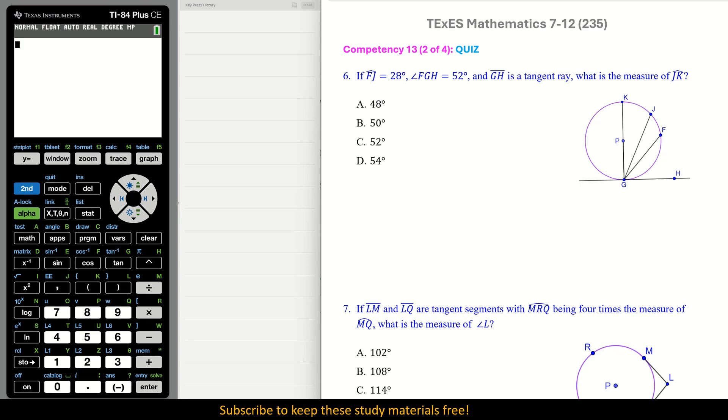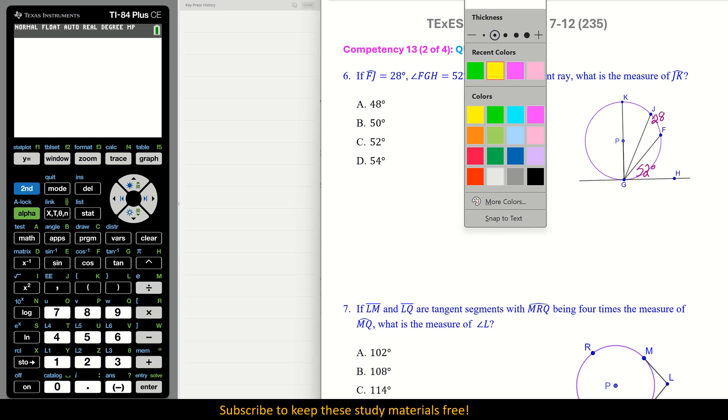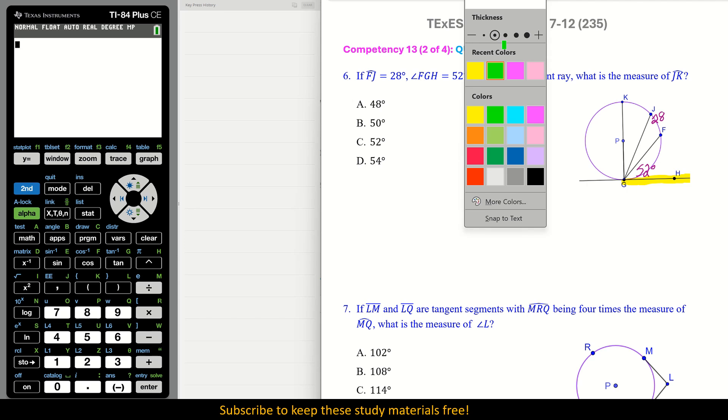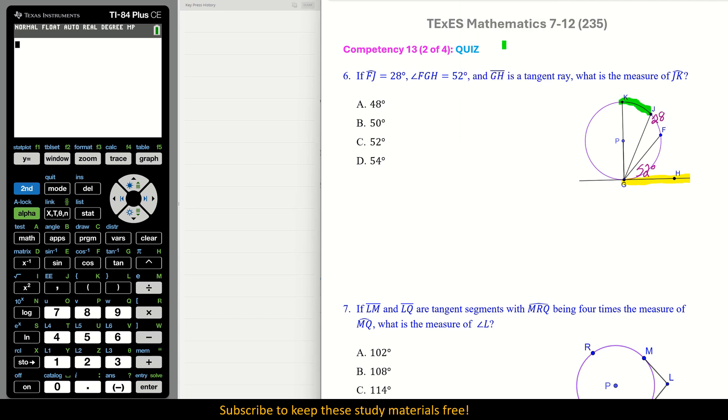Number 6. If arc FJ equals 28, let me put that there, 28, and angle FGH is 52, that'll be this angle right here, and GH is a tangent ray, what is the measure of JK?